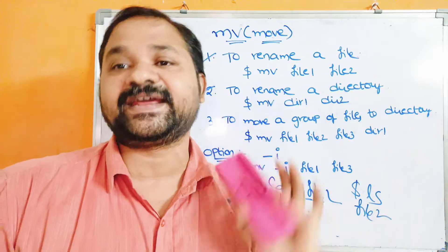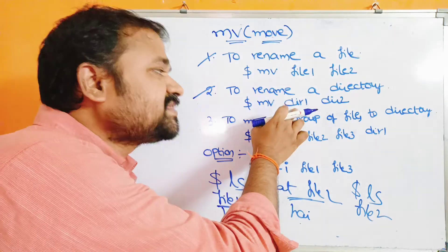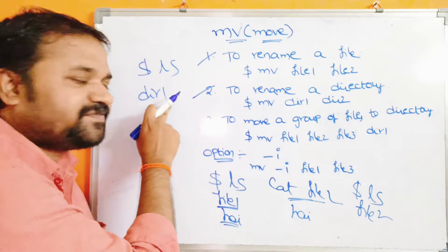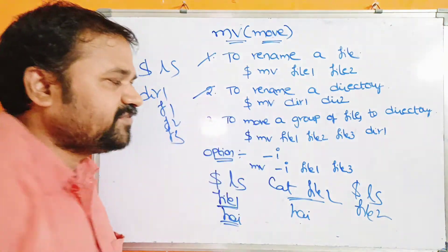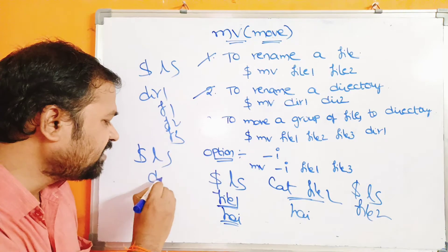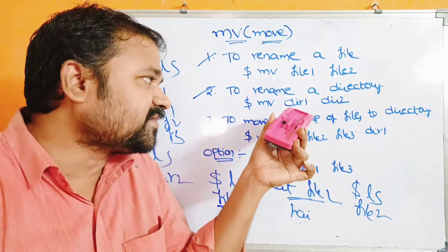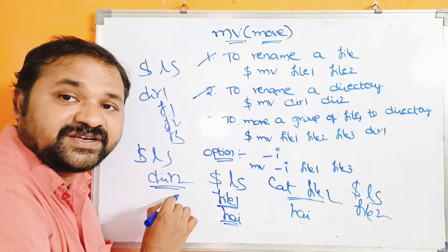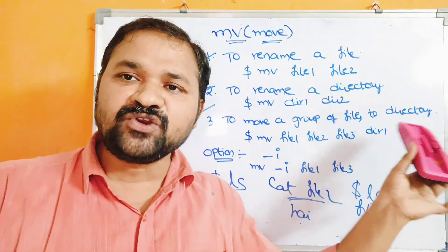Another advantage of the move command is it is useful to rename a directory. Let's say directory1 contains three files. When we execute mv directory1 directory2, all three files will be moved to directory2. If we run ls, we will have only directory2 — directory1 will no longer be available, because we are cutting directory1 and pasting its contents into directory2. So directory2 will contain file1, file2, and file3.